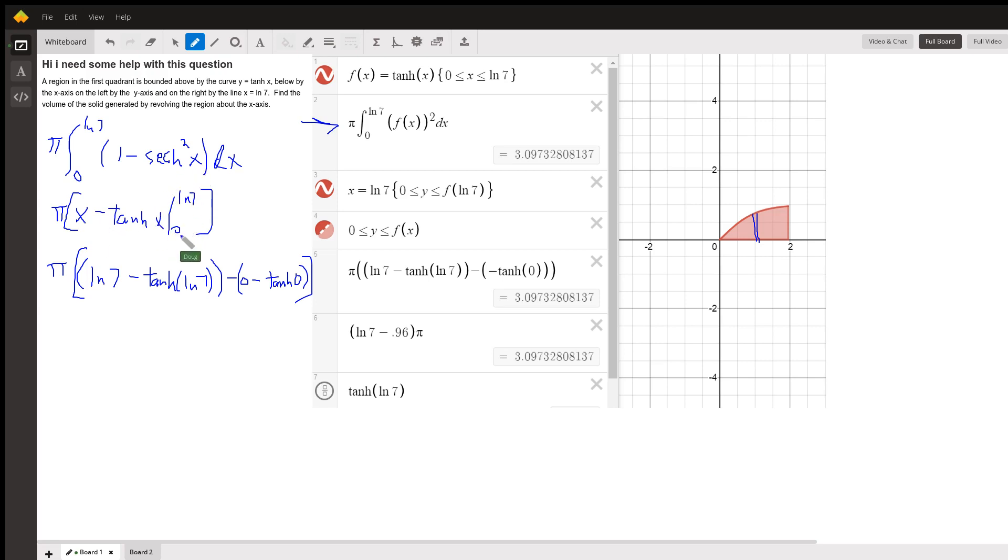And we want to evaluate that from 0 to the natural log of 7. So we picture putting in ln of 7 minus hyperbolic tangent log of 7, minus put 0 in for x, and hyperbolic tangent of 0 is 0.